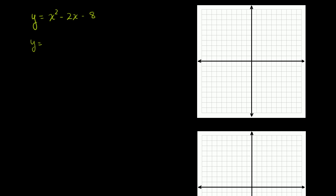We get y is equal to — so what are two numbers where their product is negative 8? They're going to have different signs, and their sum is negative 2. If we have negative 4 and positive 2: their product is negative 8, and their sum is negative 2. So we can rewrite y as being equal to x minus 4 times x plus 2. This is essentially writing the quadratic function in intercept form.